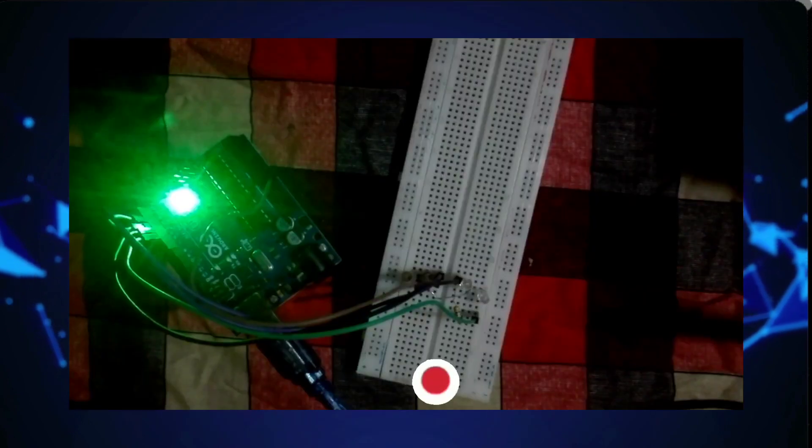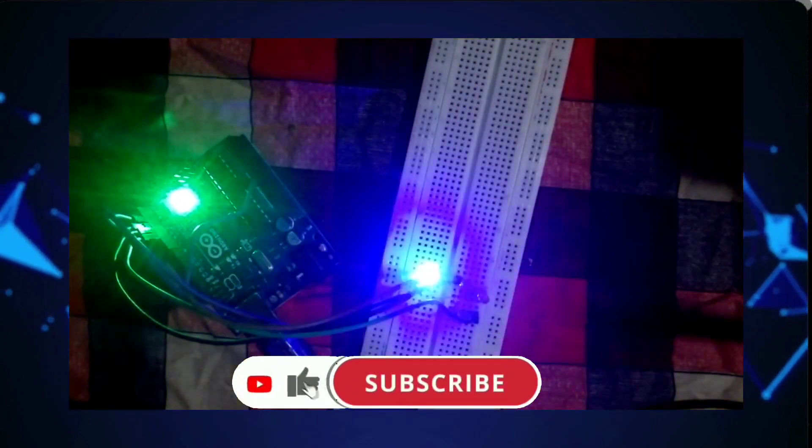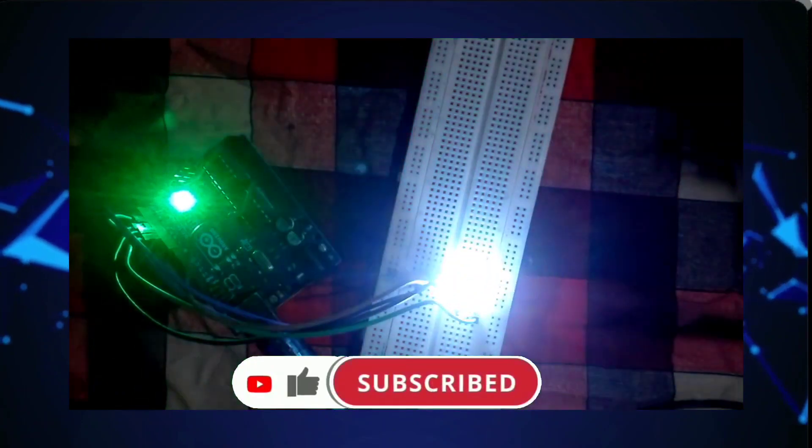Arduino Uno includes 1 kilobyte of EEPROM, which allows for non-volatile storage of data that remains even when the power is turned off.